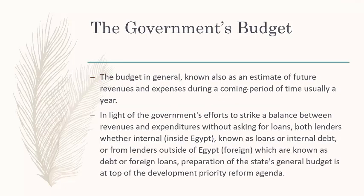The budget in general is known as an estimate of future revenues and expenses during the coming period, usually a year. The fiscal year for the Egyptian government starts from the 1st of July and ends on the 30th of June.